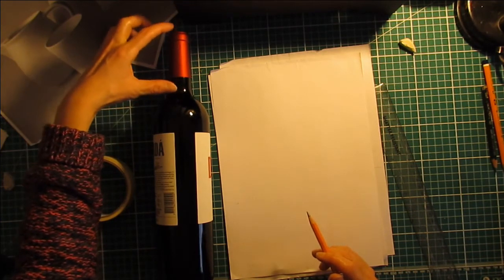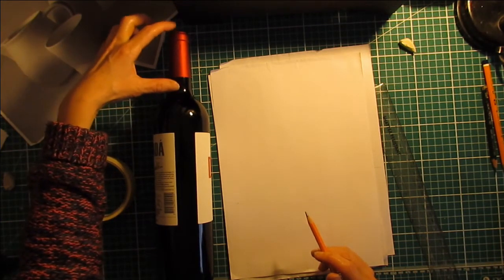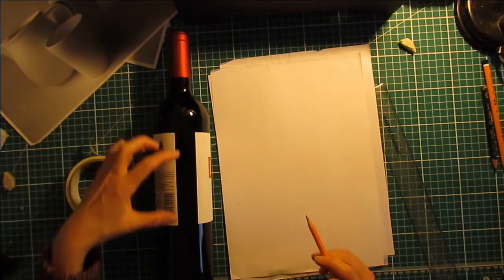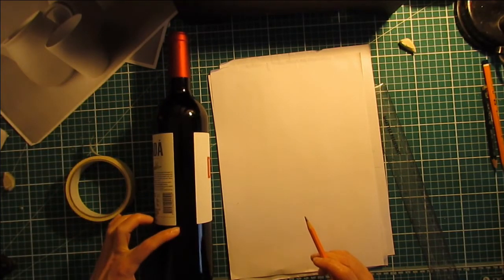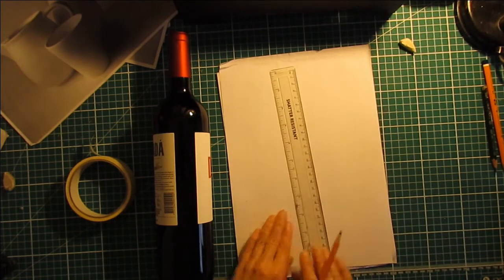Okay, so now we know the neck of the bottle is a quarter of the full bottle because it's one, two, three, four. Okay, so that will help me when I'm doing my bottle.